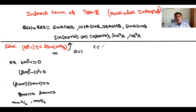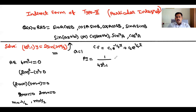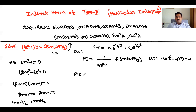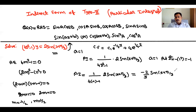The complementary function is CF = c₁e^(−x/2) + c₂e^(x/2). For the particular integral: PI = 1/(4D²−1) · 2 sin(x + π/3). Here A = 1, so replace d² with −1²= −1. Therefore PI = 1/(4·(−1) − 1) · 2 sin(x + π/3) = 1/(−5) · 2 sin(x + π/3) = −(2/5) sin(x + π/3).